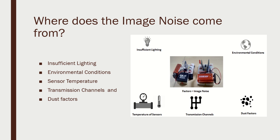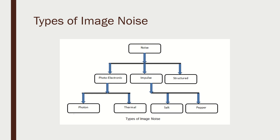What are the sources of image noise? First, insufficient lighting — perfect lighting is needed for a 100% quality image. Second, environmental conditions such as fog, snow, or darkness. Third, sensor temperature — if the camera has been used for a long time and gets heated up, noise increases. Fourth, transmission channels are a major issue. Fifth, dust is one of the very important factors contributing to noise. Image noise is generated by one or all of these five factors.